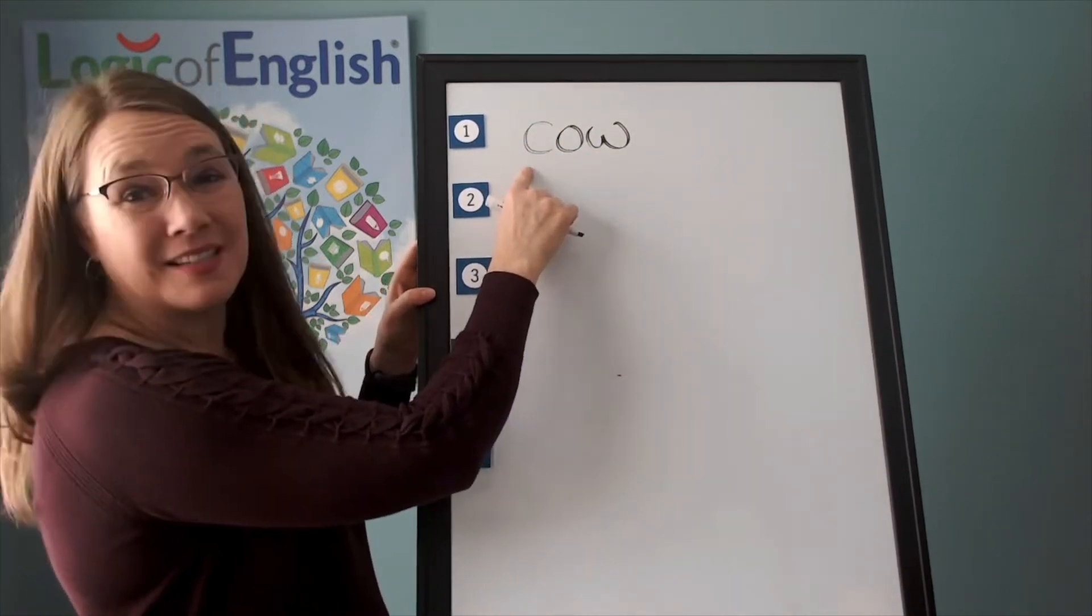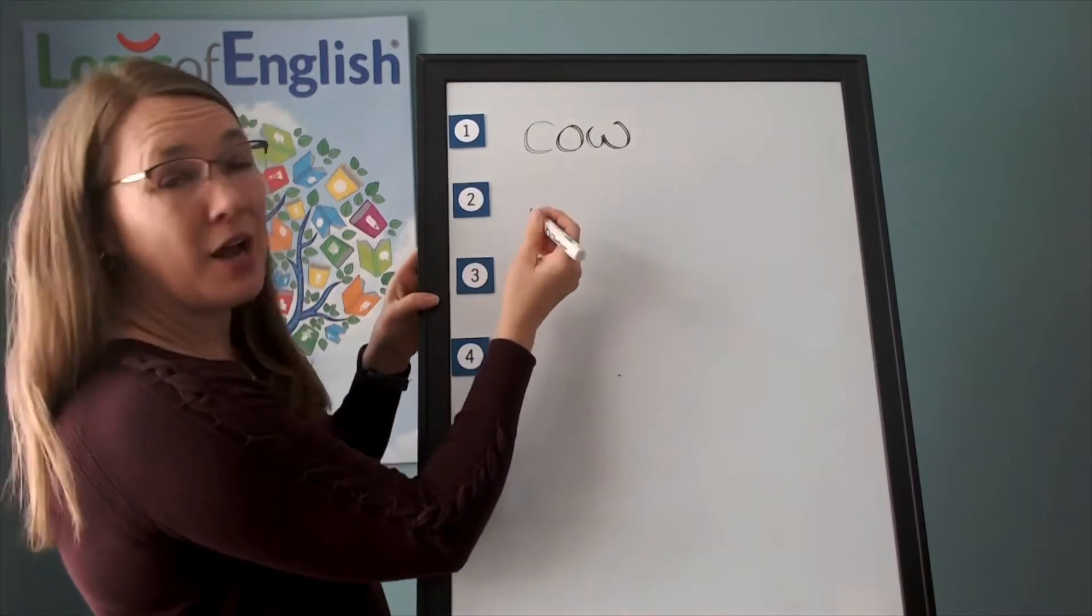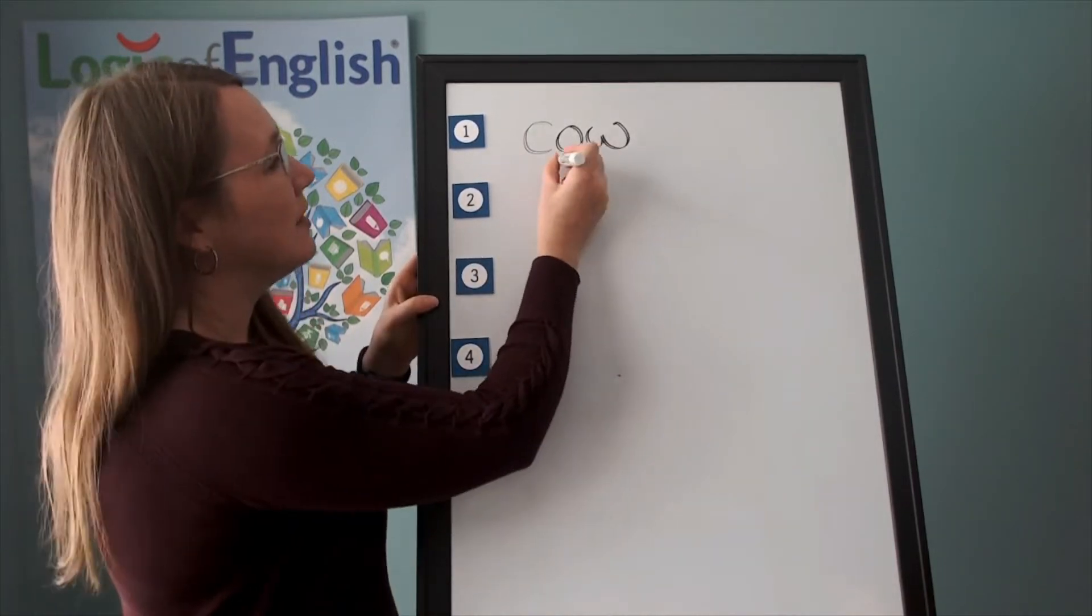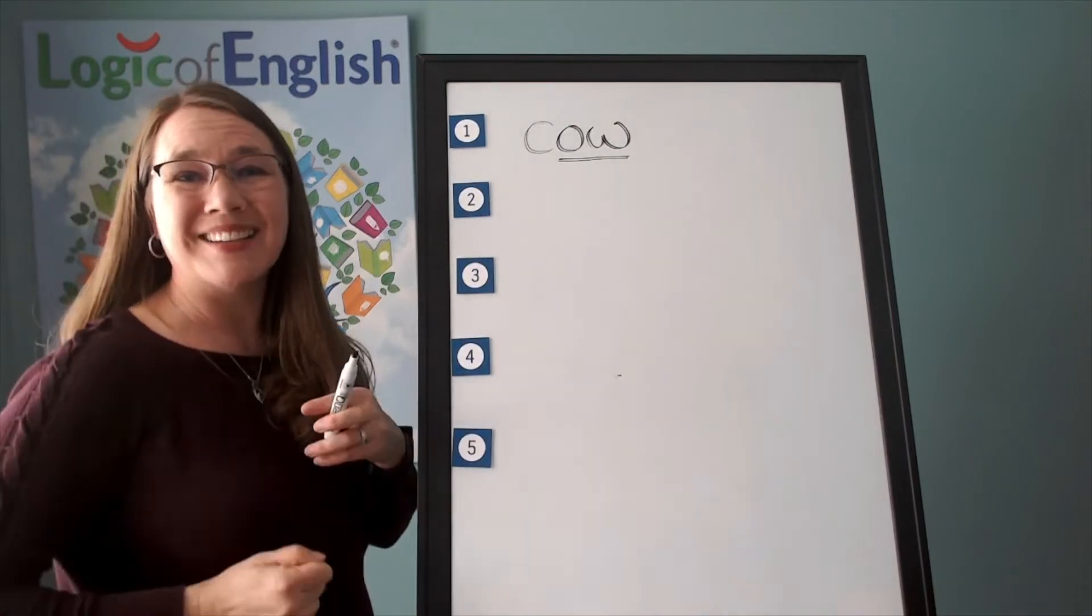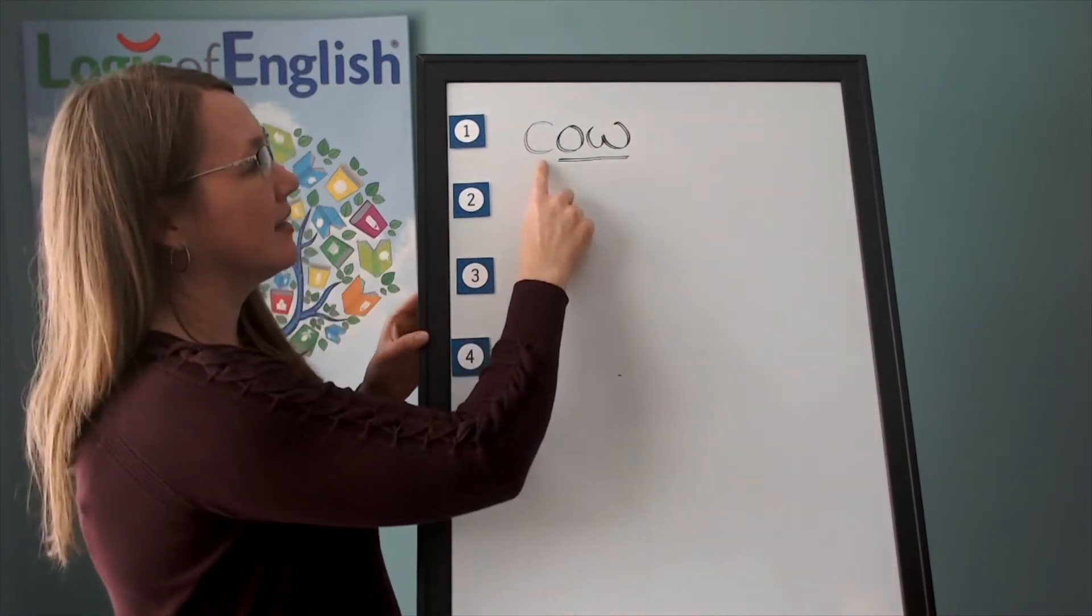Did you use a c-s here? Alright, how will we mark cow? We'll underline the ow. And what sound of ow-o is that? It's the first sound. C-ow.